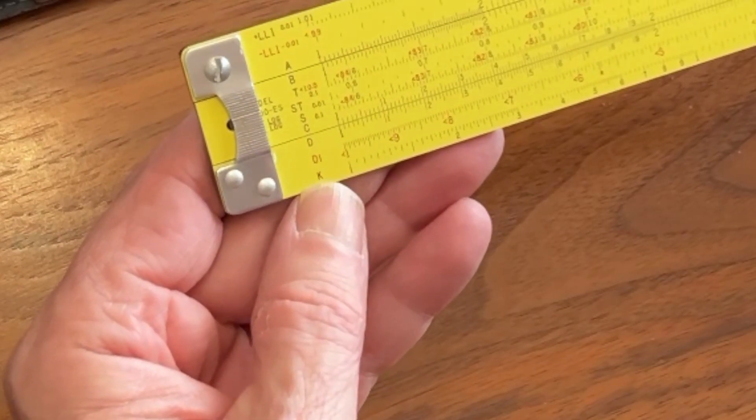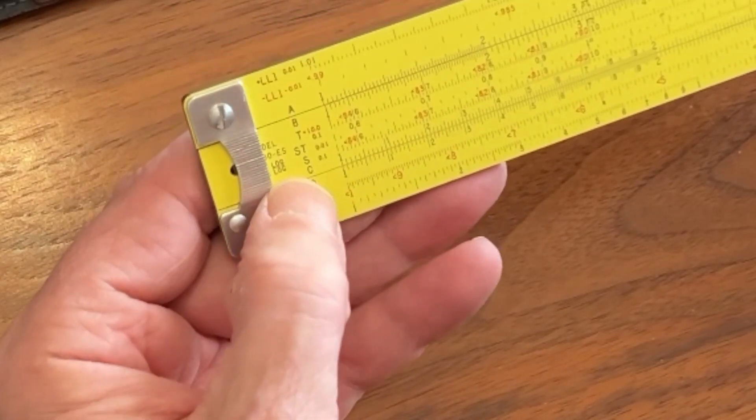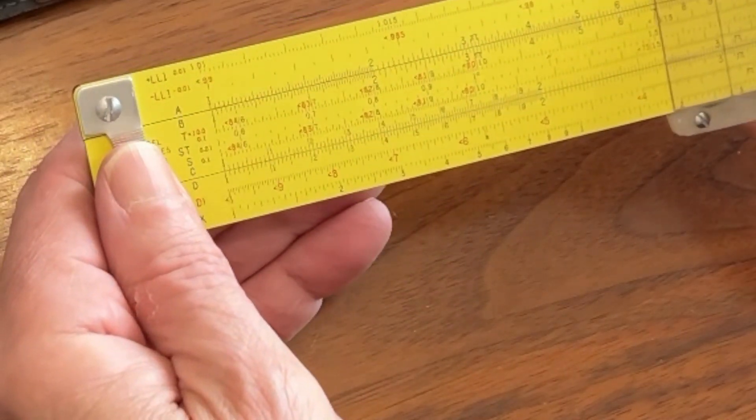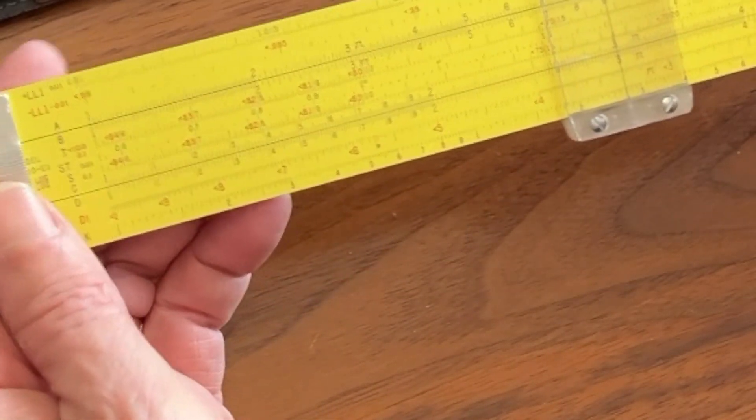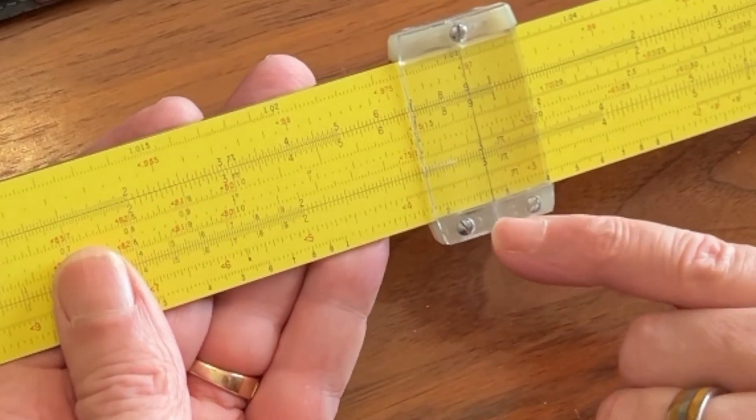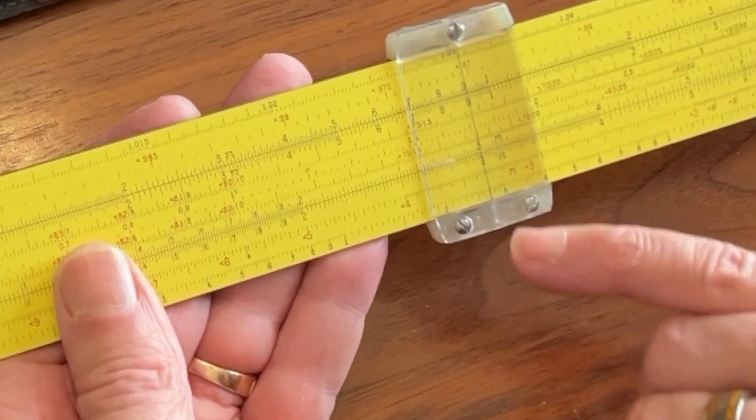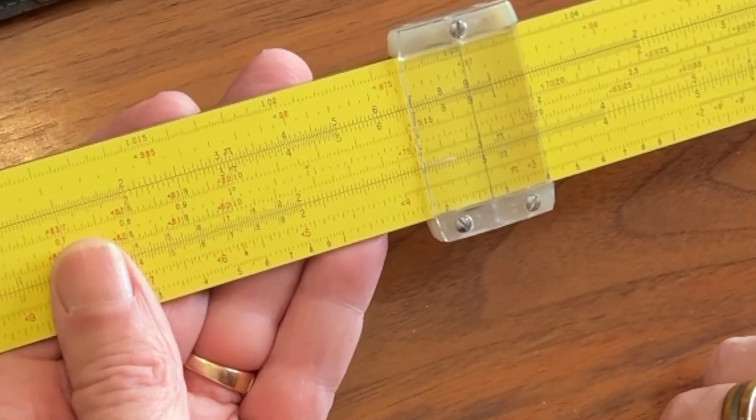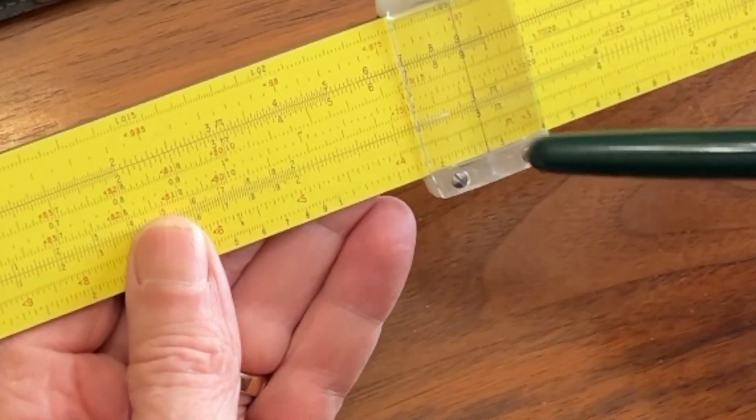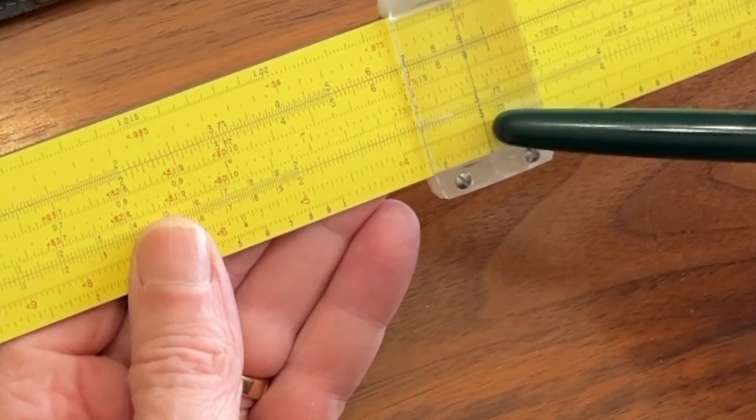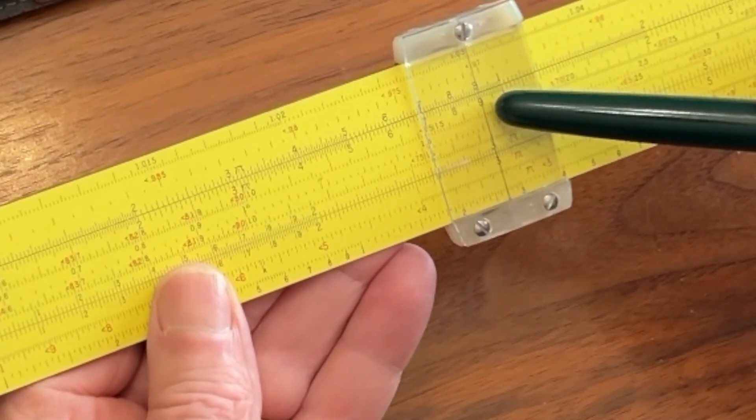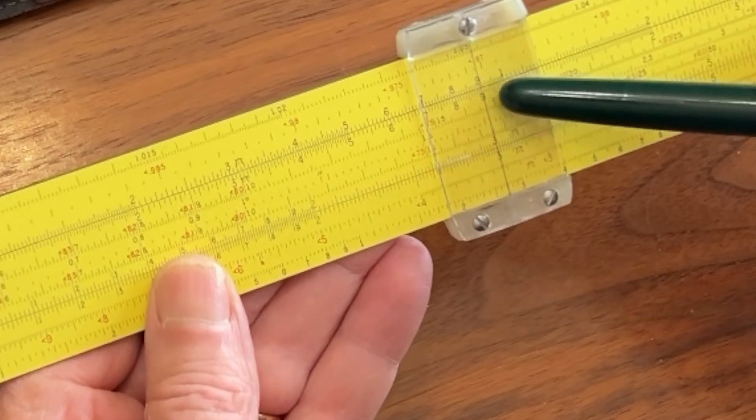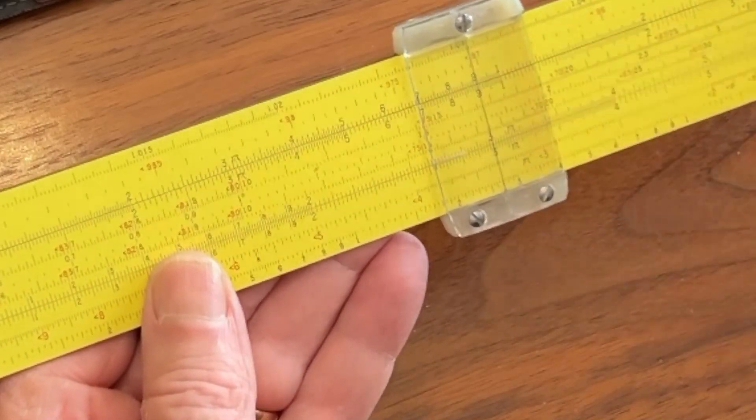Well what about the K scale down here? The K scale is the cube of the numbers that are on the CD scale. So if we come here to 3 on the CD scale and want to get its cube, we read straight down and see 27. Well how do we get 27 from the K scale back up to the CD scale? Once again, kind of the same thing. So here is x, 3, x squared is right above it, 9, and we want x cubed. So if we multiply x by x squared, we get x cubed.